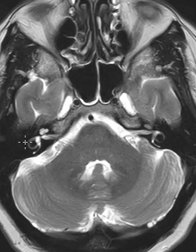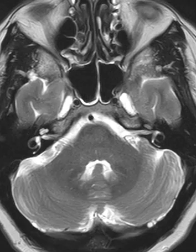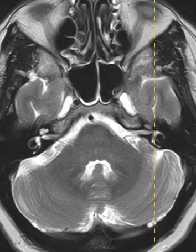Now we're going to look at the semicircular canals on what we call a sagittal view, which is a 90-degree view to this. We're going to be slicing from front to back.